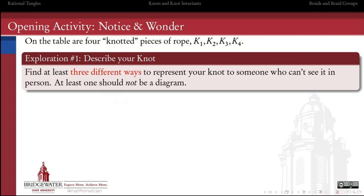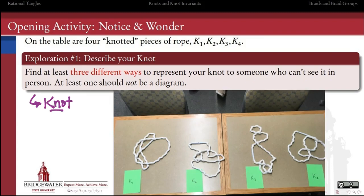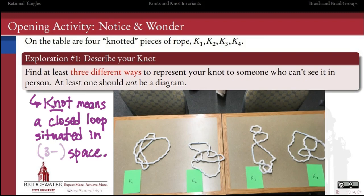What we did in class is we started with four knotted up pieces of rope just laying on a table. When we say the word knot in knot theory, what we mean is a closed loop. These knots all wrap back in around on themselves so they don't have an end or a beginning. It's a closed loop situated in three dimensions. The first question was, let's find at least three different ways to represent this knot to somebody who can't see it in person. At least one of those ways of representing should not be just a drawing of some type.